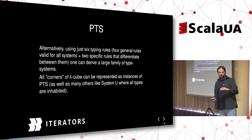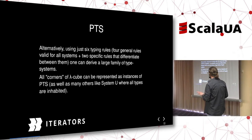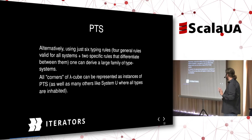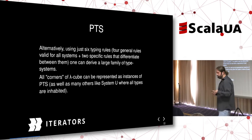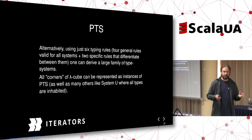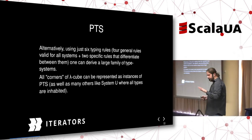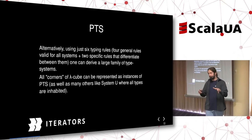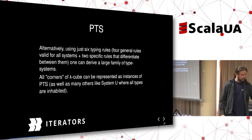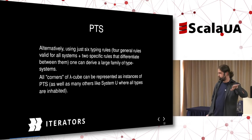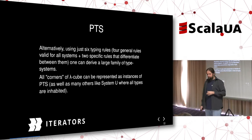The highlights of pure type systems theory are that it's very generic — it can describe types beyond the lambda cube as well as all types on it. For instance, one derivable type system is so-called System U, which is a really powerful and expressive type system.